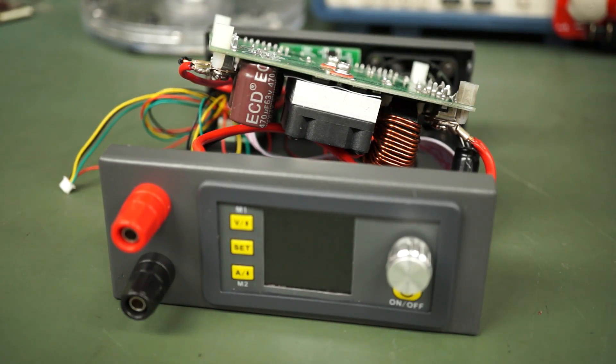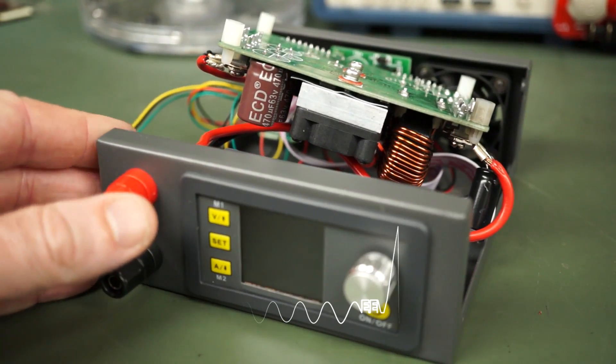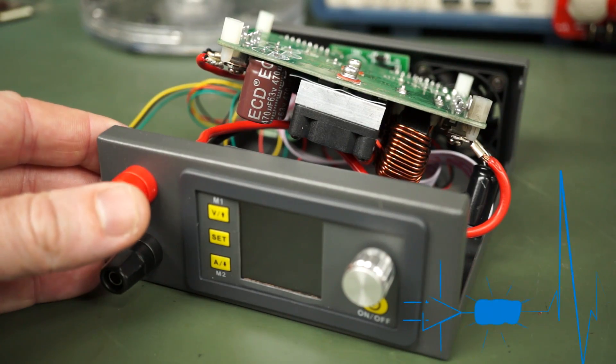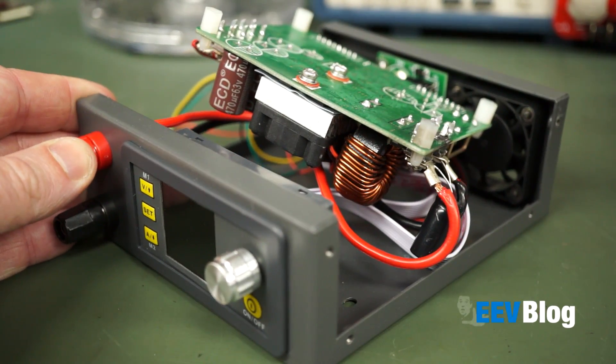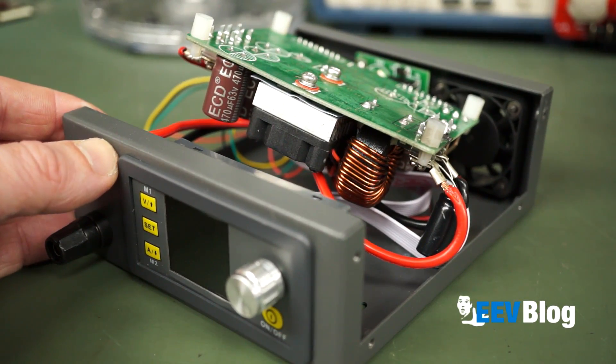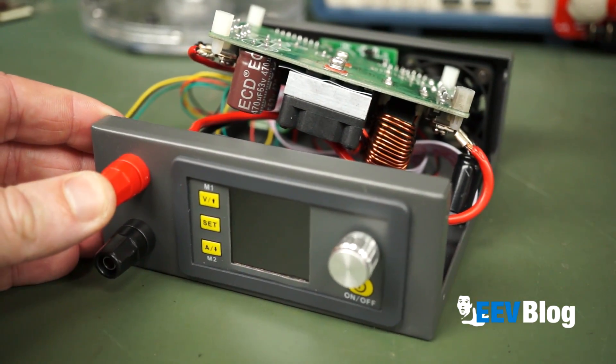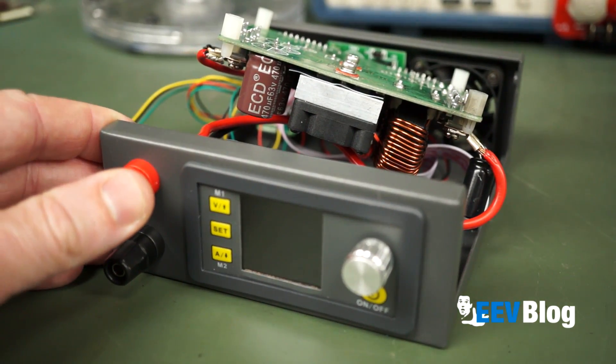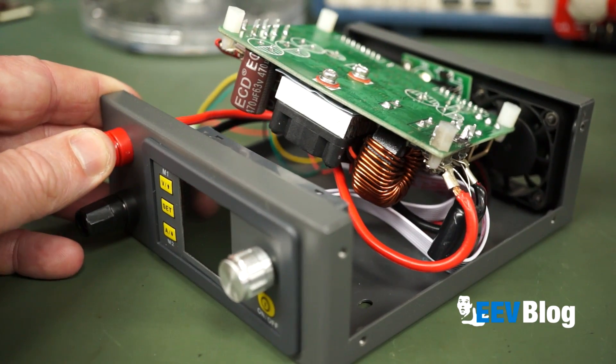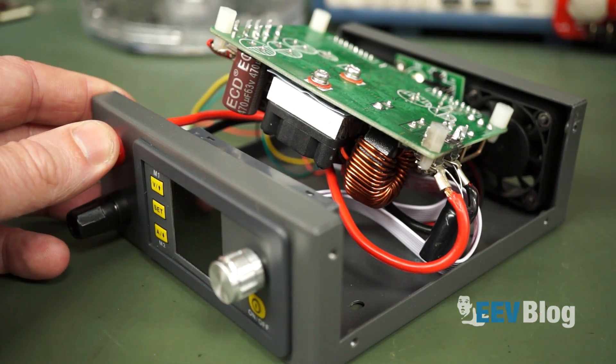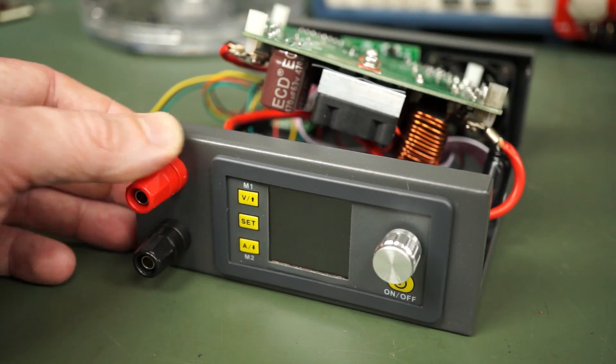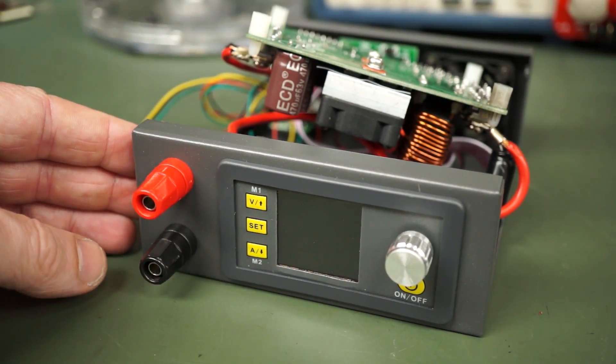Hi, just a quick follow-up video to my previous one where we saw this RD-Tech DPS 5020 module have the magic smoke escape from it. I'll link that one in here at the end of the video and also down below. So I thought we'd do a quick follow-up actually getting this thing up and running again. Let's get to it.